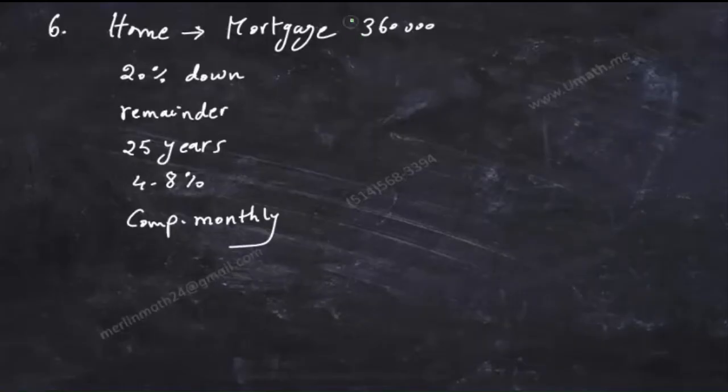In number 6 we have a mortgage of $360,000 value with 20% down payment, so this would be 80% of the value which becomes the remainder value.